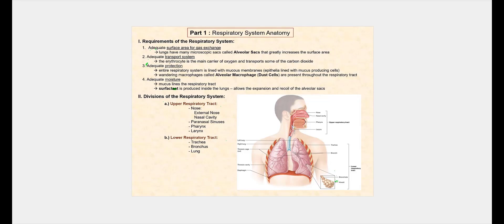When we look at our lungs, we will see that we have these microscopic sacs which our lungs are made up of, which we refer to as alveolar sacs. What I'm circling right now at the bottom right-hand corner is one alveolar sac. This is what our lungs are made up of, so having these alveolar sacs will greatly increase the surface area.